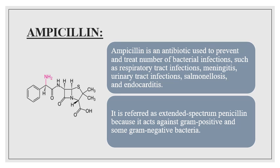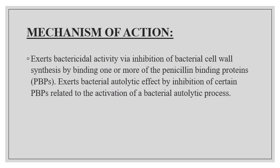Ampicillin has more extended activity against aerobic gram-negative bacilli than penicillin. Ampicillin is able to penetrate gram-positive and gram-negative bacteria. It differs from penicillin only by the presence of an amino group. That amino group helps the drug to penetrate the outer membrane of gram-negative bacteria.